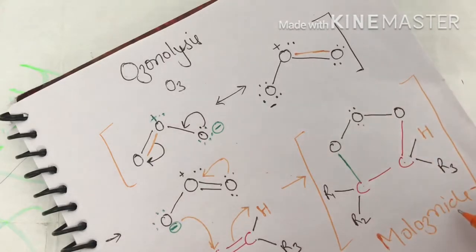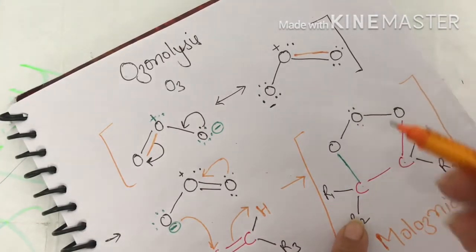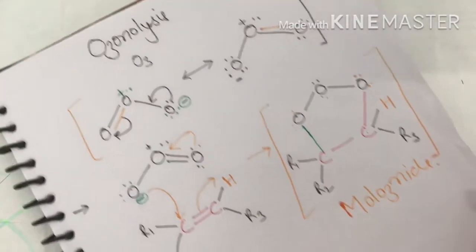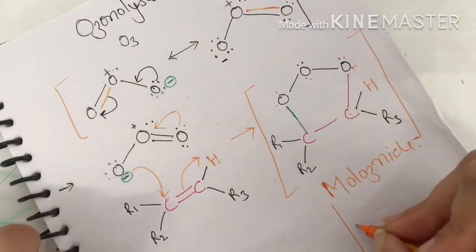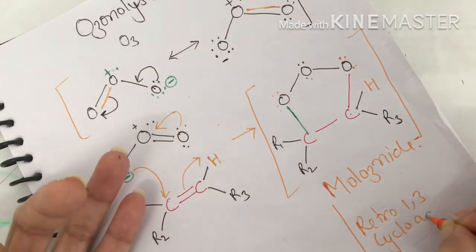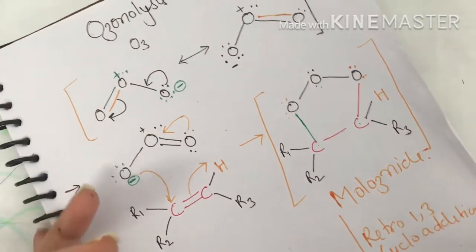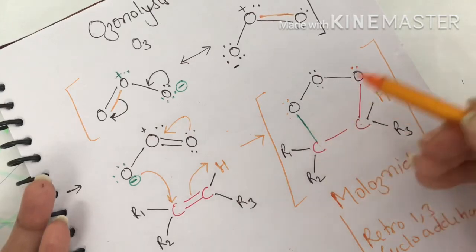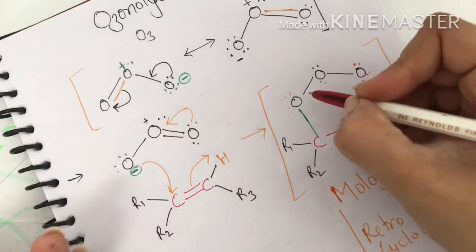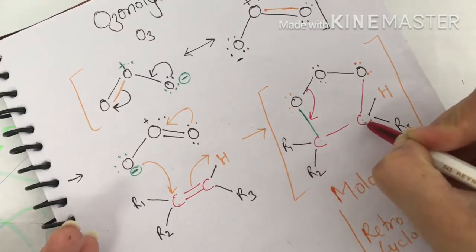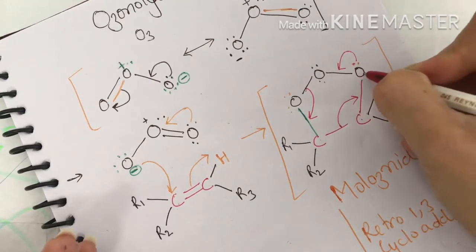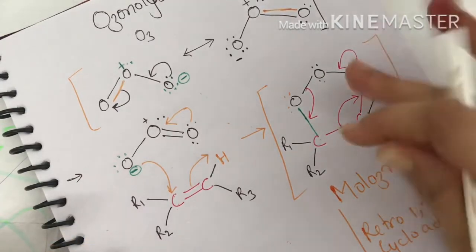Ozone has a formal charge, but in the molozonide when attached to the alkene there is no formal charge. However, since it has three sigma bonds at the same carbon it is very unstable, and it undergoes retro [1,3]-cycloaddition. In this cycloaddition, the bonds rearrange: the carbon-carbon bond shifts between carbon and oxygen, and the lone pairs of electrons make a double bond between the two oxygen atoms.